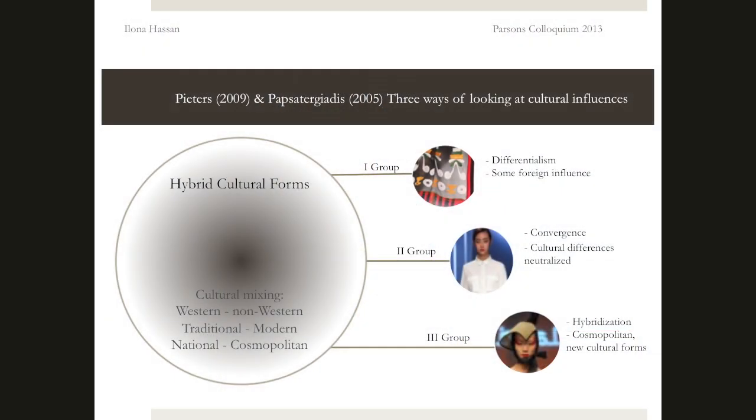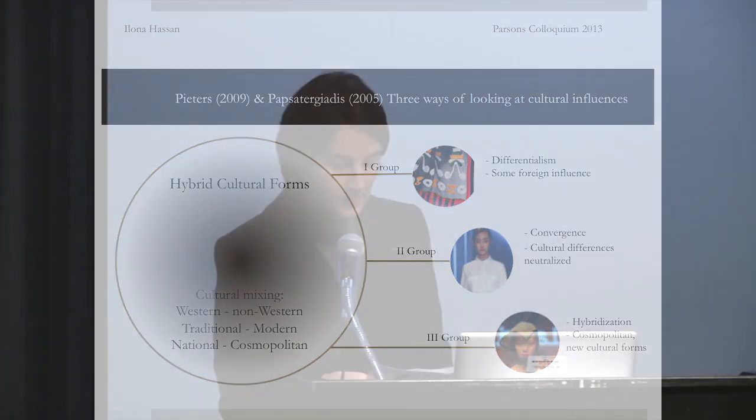My visual social semiotic approach requires conceptual parameters. I chose Pietras and Papastrojadis's models of distinguishing cultural differences and hybrid cultural forms. They both define three groups of culturally hybrid identities — a mix between foreign and local cultural elements. Hybridization refers not only to the broad cultural divide between Western and non-Western, but also between traditional and modern, territorial and cosmopolitan cultural forms. Pietras discusses hybridity as globalization and cultural mélange, distinguishing differentialism, convergence, and hybridization.